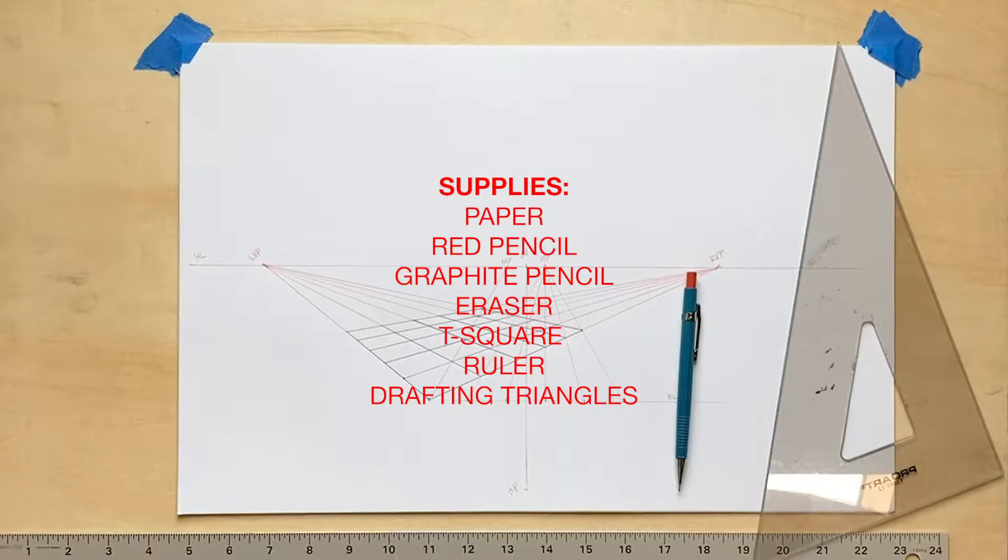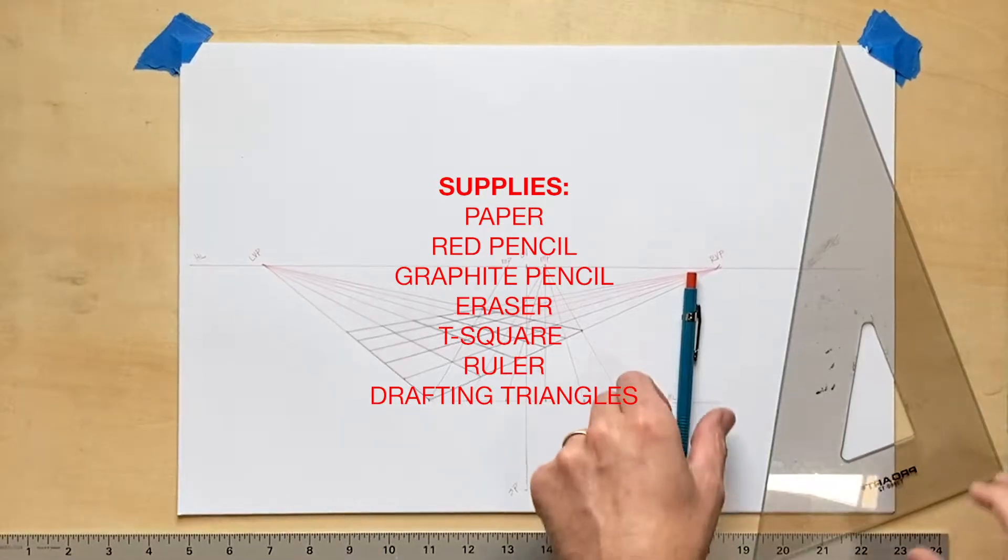You'll need the following supplies: paper, red pencil, graphite pencil eraser, straight edge ruler, t-square, and a set of drafting triangles.